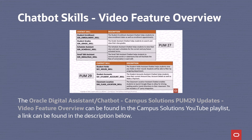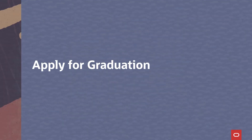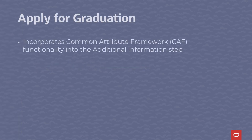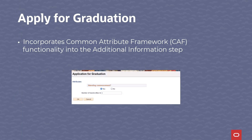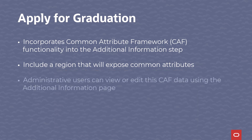Be sure to check out the Campus Solutions YouTube channel for a video feature overview of the new chatbot skills. Another couple of updates for student self-service involve the fluid apply for graduation flow. First, we've incorporated the common attribute framework functionality into the additional information step in the activity guide. We modified the page to include a region that will expose any common attributes enabled for the apply for graduation record context. Administrative users can view or edit this CAF data using the updated additional information page in the application for graduation component. You'll now be able to collect and manage data unique to your institution as part of the apply for graduation process with no customizations.